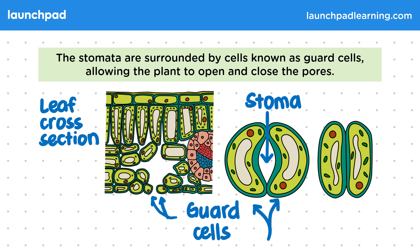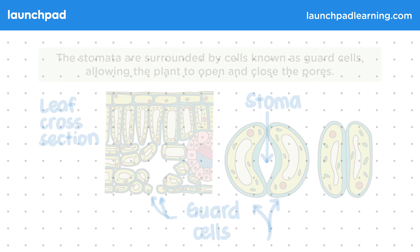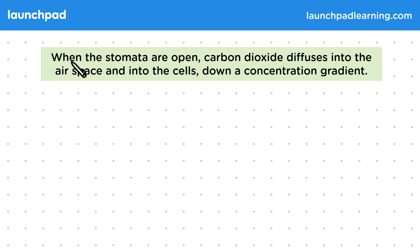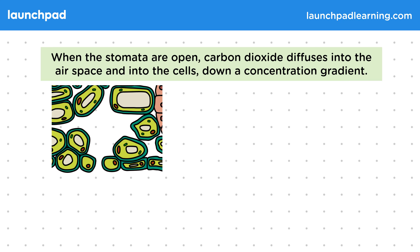So what is the function of the stomata? When the stomata are open, carbon dioxide diffuses into the airspace and into the cells, down a concentration gradient. You need to learn that the role of the stomata and the guard cells are to control gas exchange and water loss within the leaf.